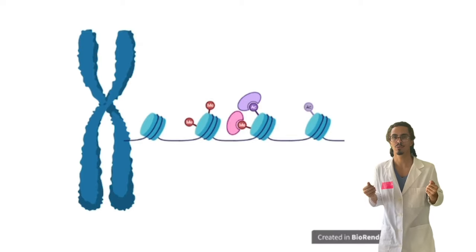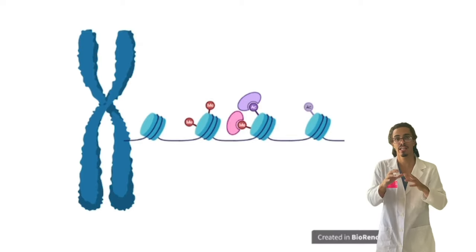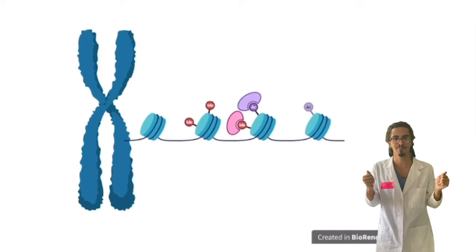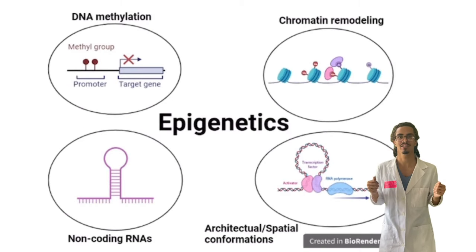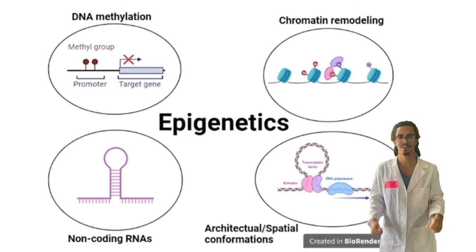By chemically modifying nucleosomes, we can either turn the gene on or off and regulate gene expression throughout the entire genome. There are many forms of epigenetics and it's up to us as scientists to figure the rest out.